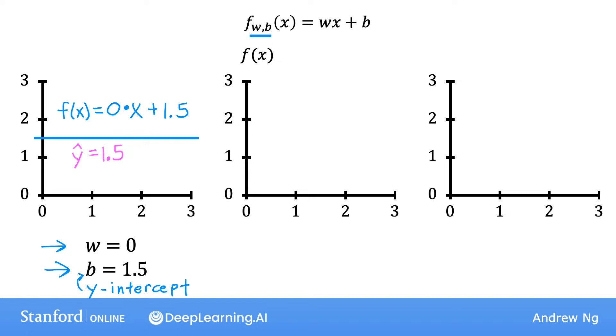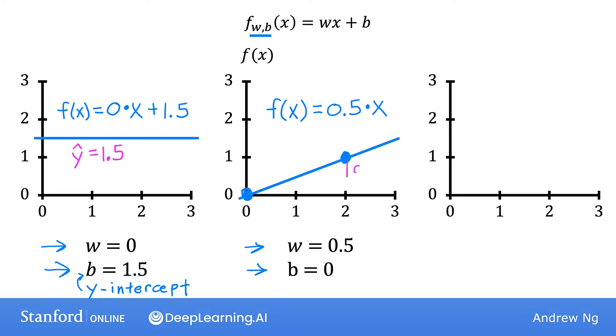As a second example, if w is 0.5 and b is equal to zero, then f of x is 0.5 times x. When x is zero, the prediction is also zero. And when x is 2, then the prediction is 0.5 times 2, which is 1. So you get a line that looks like this. Notice that the slope is 0.5 divided by 1, so the value of w gives you the slope of the line.